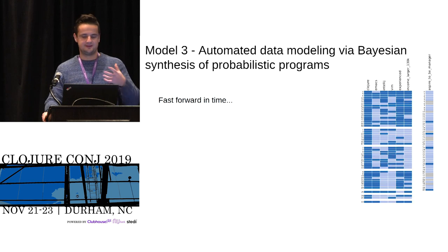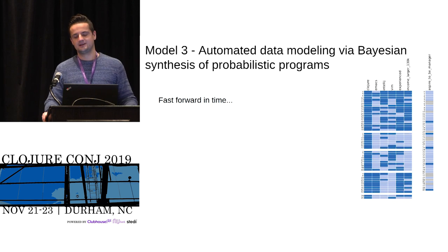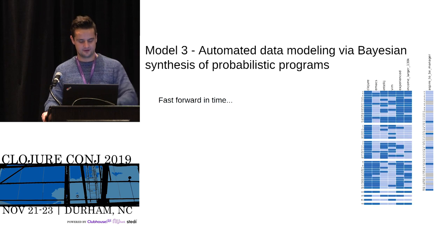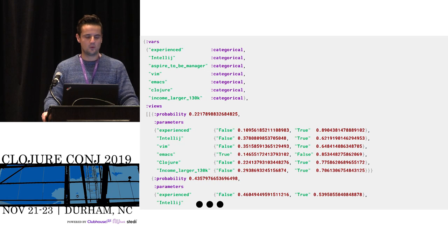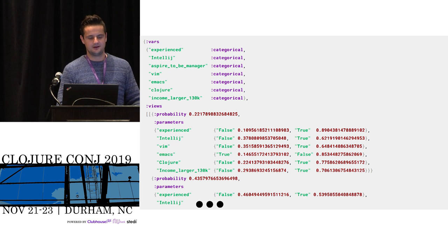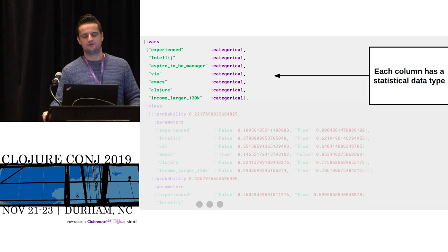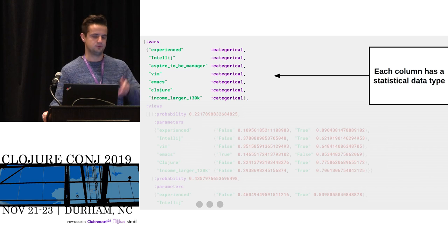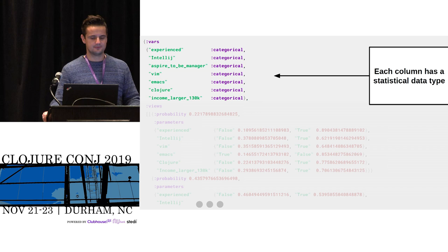Eventually you converge to something around the posterior, implying there are groupings for Clojure, Emacs, IntelliJ, Vim, experience, and large income — but all of those columns are treated independently from whether someone aspires to be a manager. That is the posterior dependency structure we get out. They still wiggle because this is a Bayesian method — you reach the posterior but always preserve some uncertainty about how rows should be clustered.